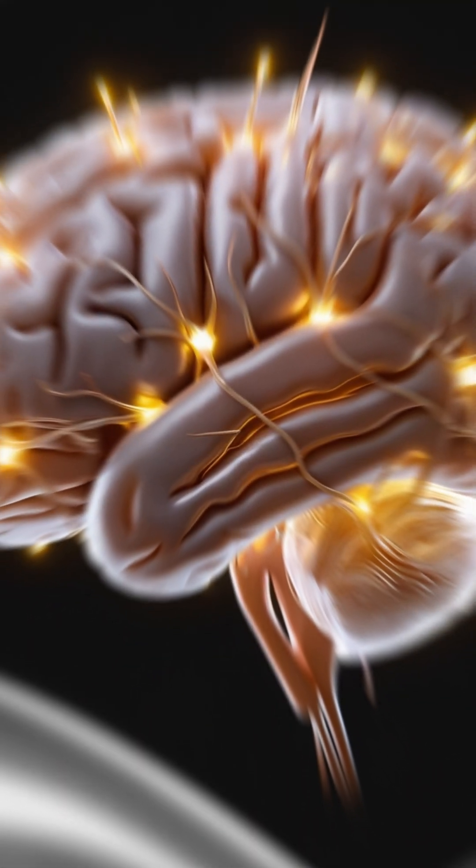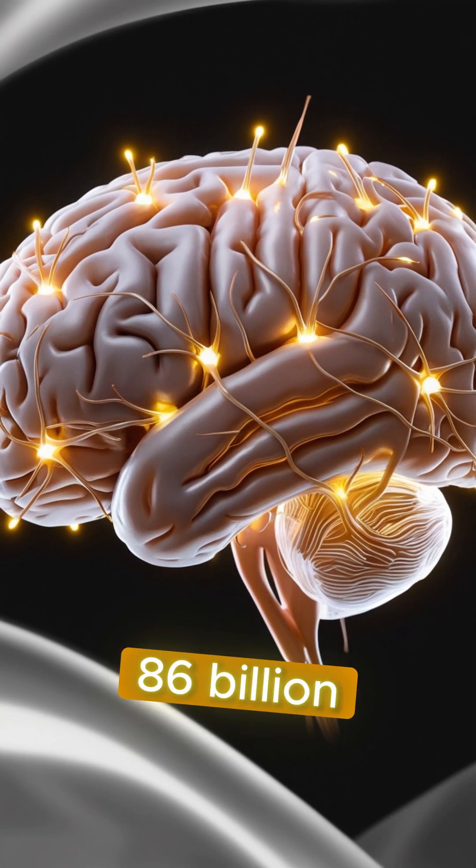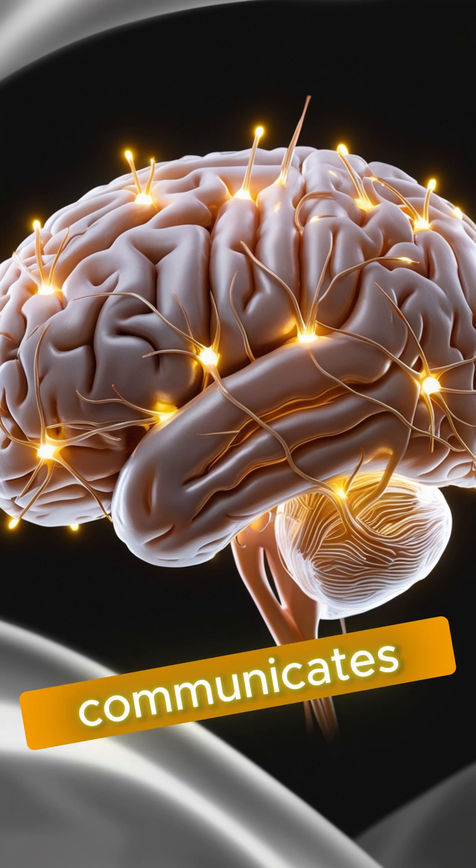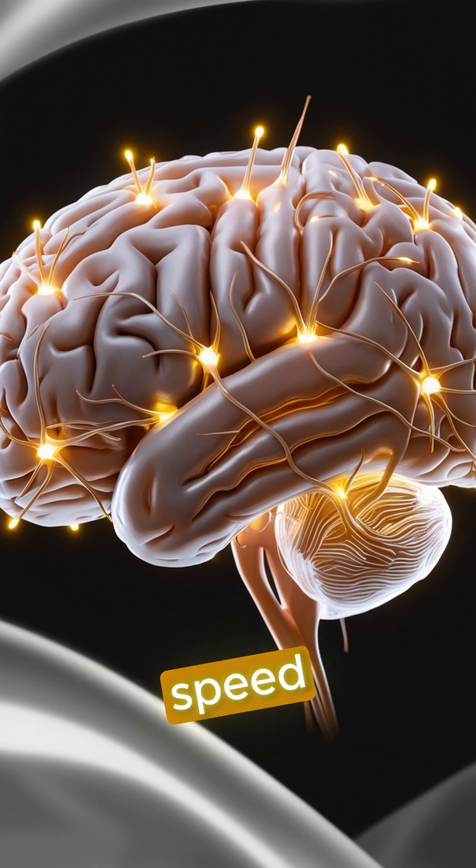Fact 2. Did you know that your brain contains 86 billion neurons? Each one communicates with the others at lightning speed. This neural network is more complex than any computer ever built.